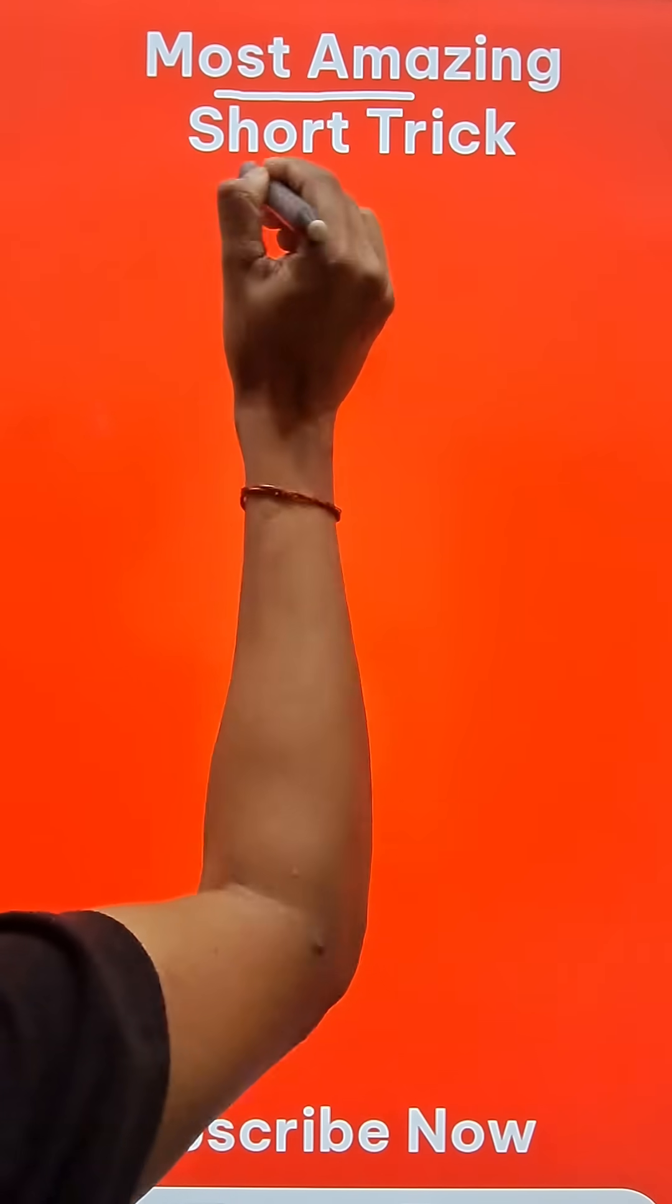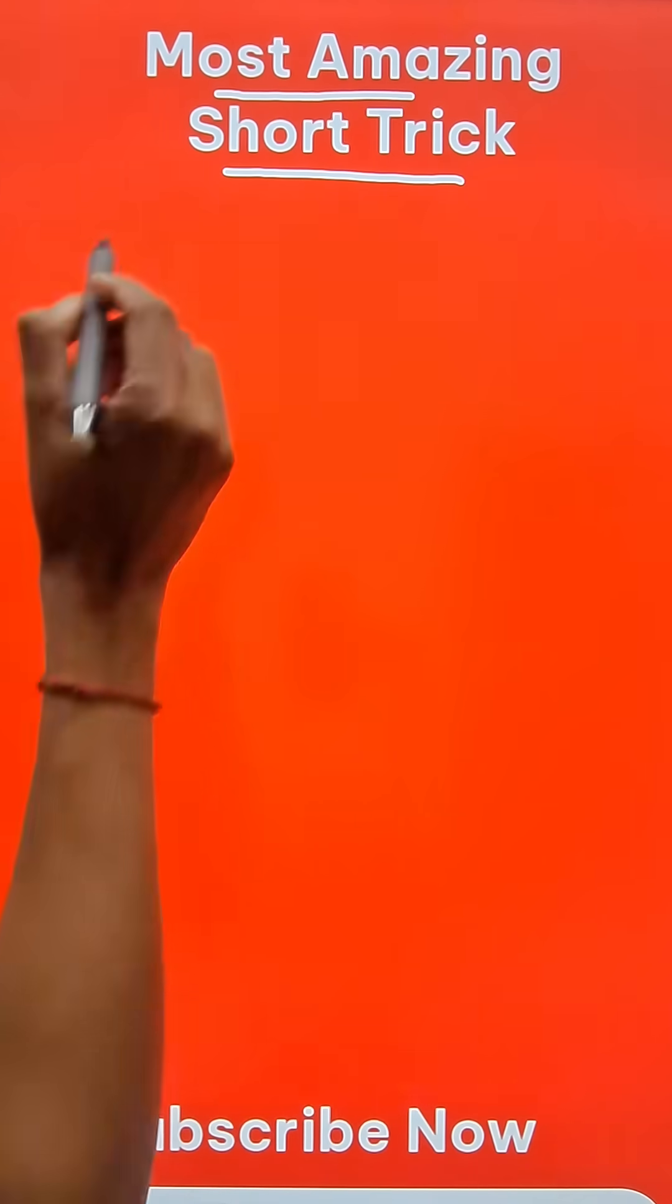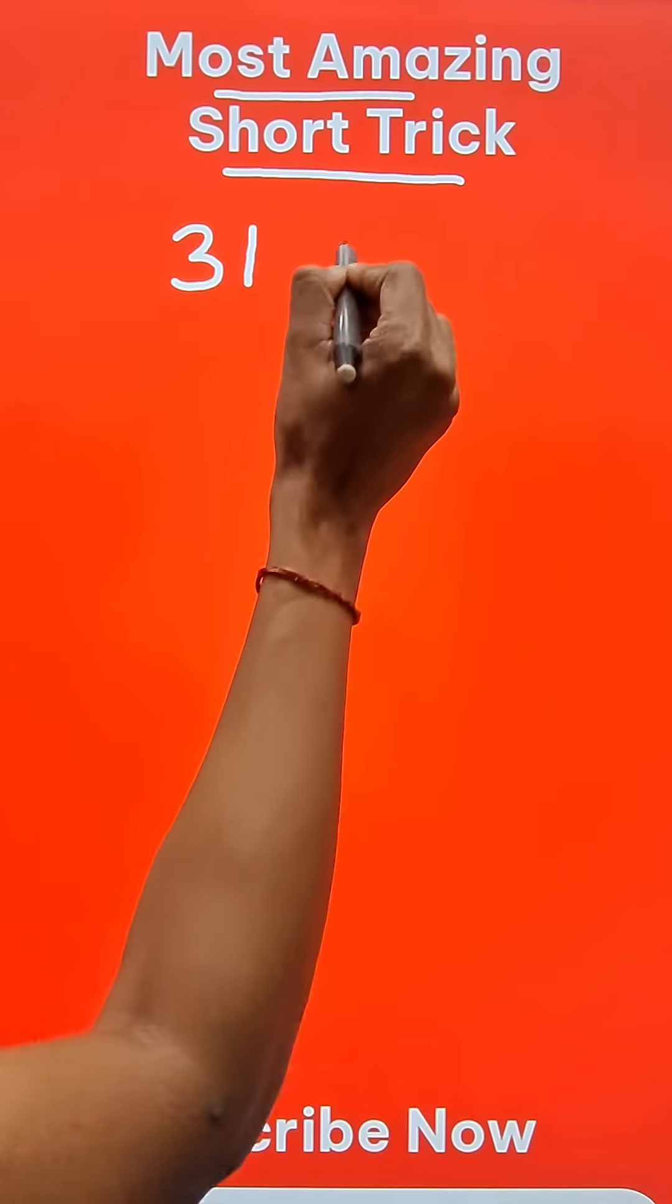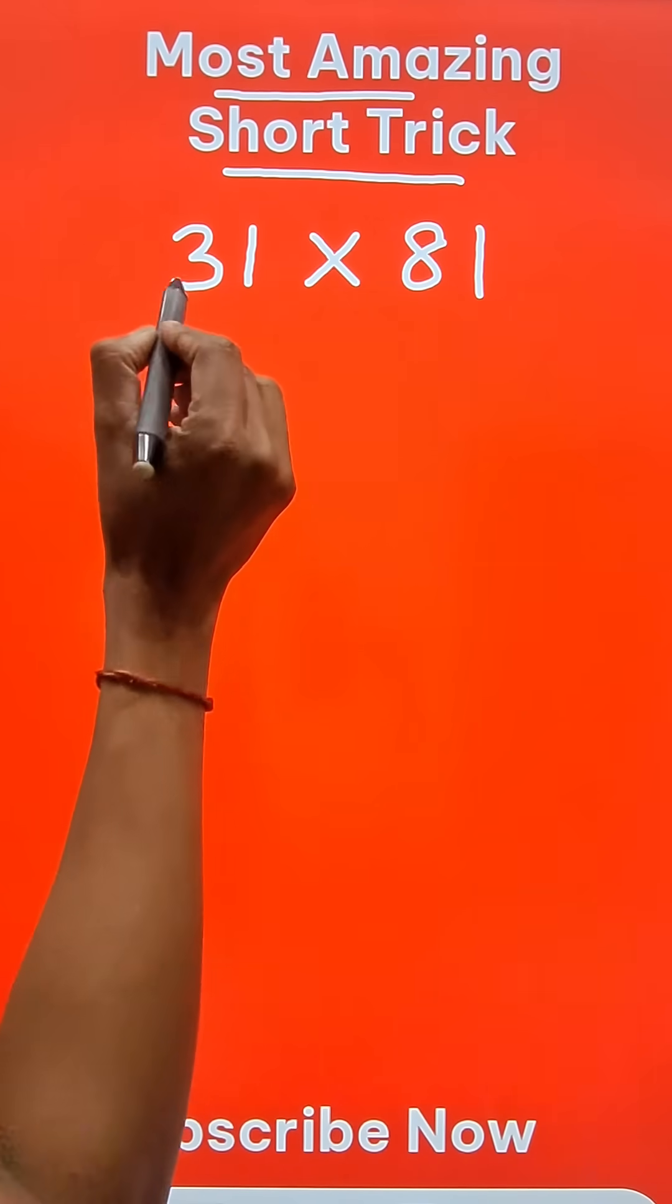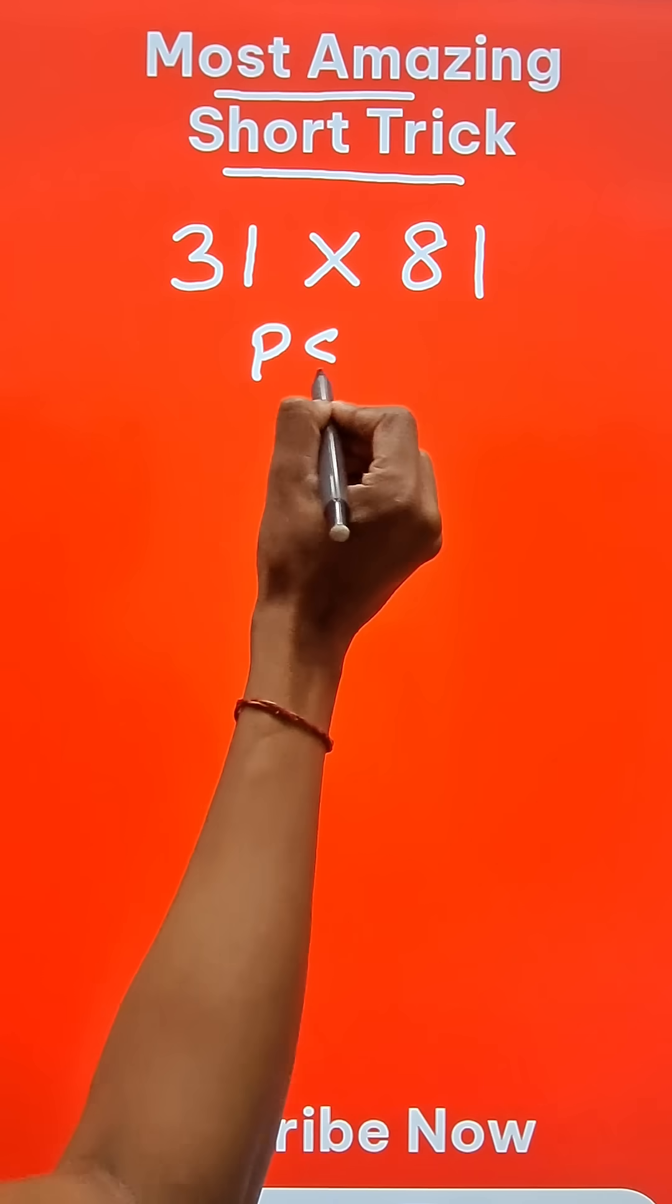Here is the most amazing short trick to multiply some special numbers. The numbers I'm going to take up are going to end in 1: 31 and 81. I call this trick the PS1 trick.